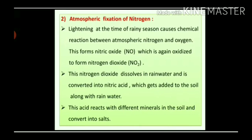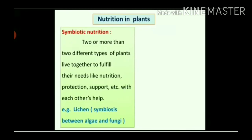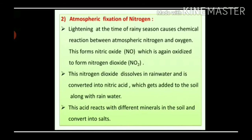In atmospheric fixation of nitrogen, lightning during the rainy season causes a chemical reaction between atmospheric nitrogen and oxygen. This forms nitric oxide (NO), which is again oxidized to form nitrogen dioxide (NO₂). This nitrogen dioxide dissolves in rainwater — NO₂ plus H₂O forms nitric acid (HNO₃) — which gets added to the soil along with rainwater. This acid reacts with different minerals in the soil and converts into salts. This is the atmospheric fixation of nitrogen. Thank you.